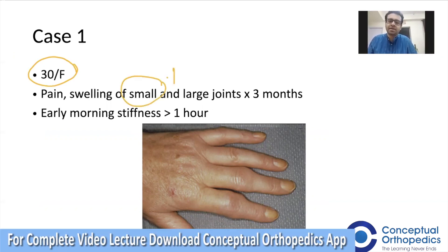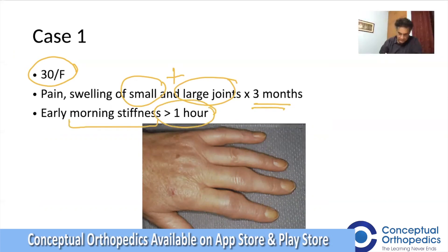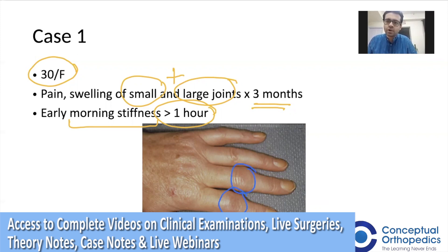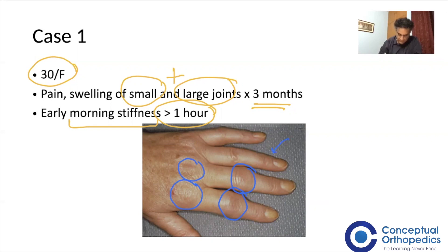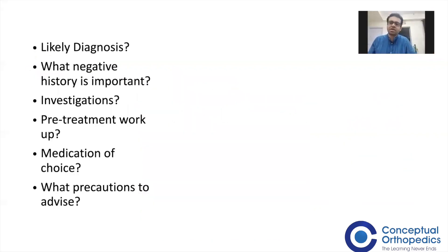She complains of early morning stiffness of more than one hour duration. You can see the image of her hand — the PIP joints (proximal interphalangeal joints) are swollen, the metacarpophalangeal joints are also swollen, and the DIP joint is completely spared. So it is arthritis affecting the PIP and MCP joints.